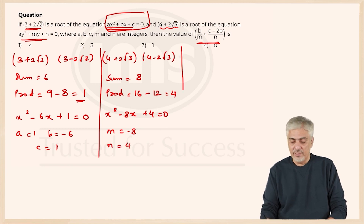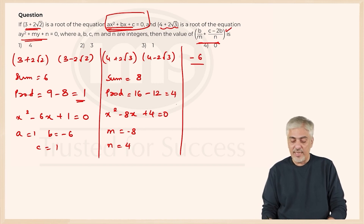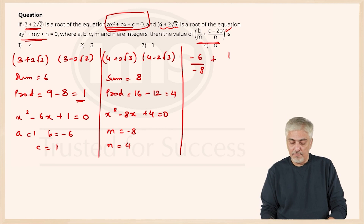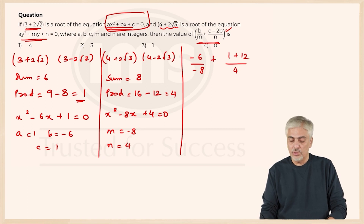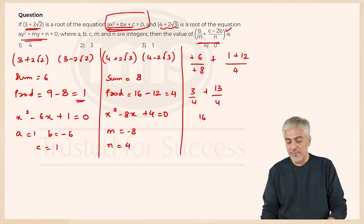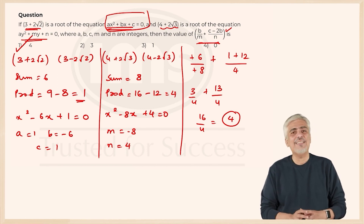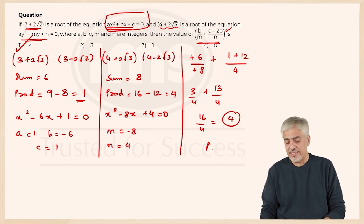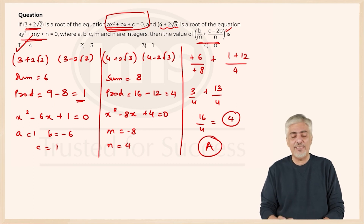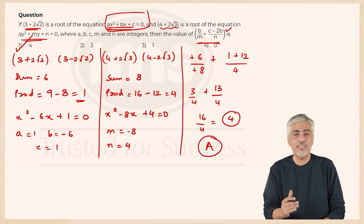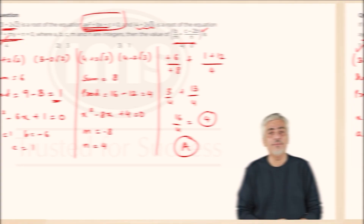Now let's carefully compute what they've asked: b/m plus (c minus 2b) over n. So b is -6, m is -8, giving -6 over -8. Then c is 1, and minus 2b becomes plus 12, giving 13. And n is 4. So we get 3/4 plus 13/4, which equals 16/4, which is 4 — that's the first option. As I said, this is category A. You should look at this problem and tell yourself: yes, I know all the steps involved, and nothing looks very difficult.